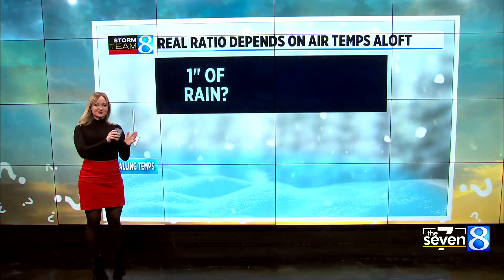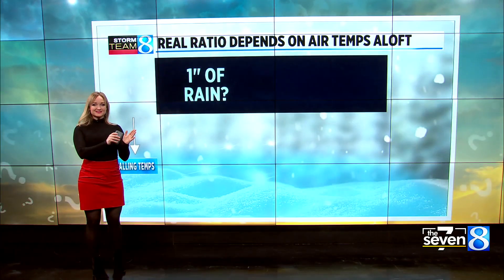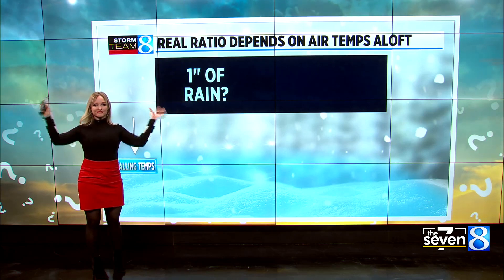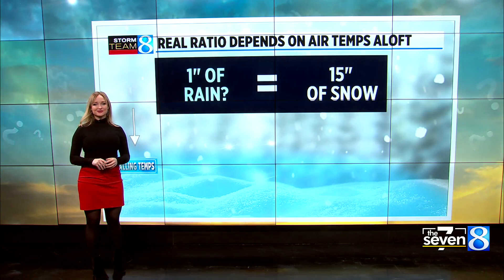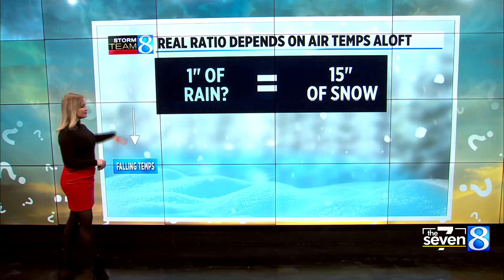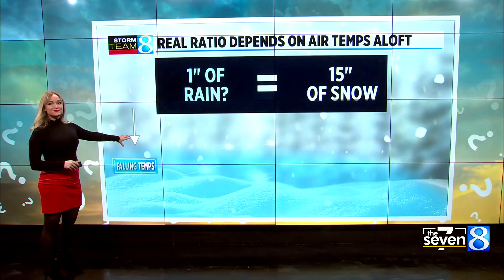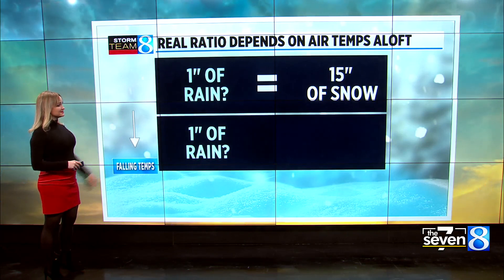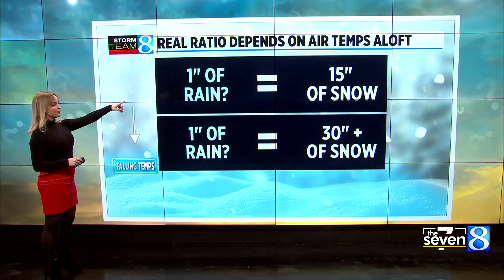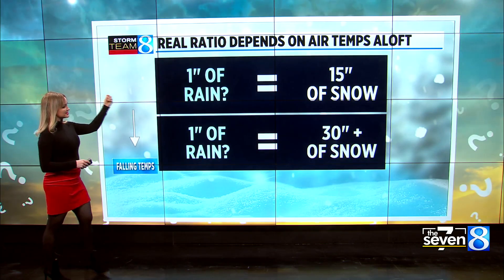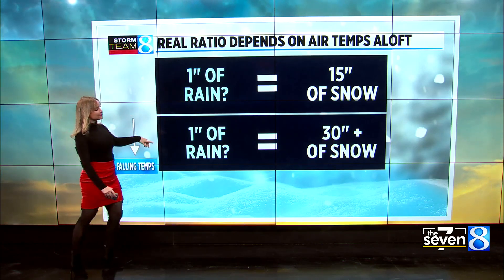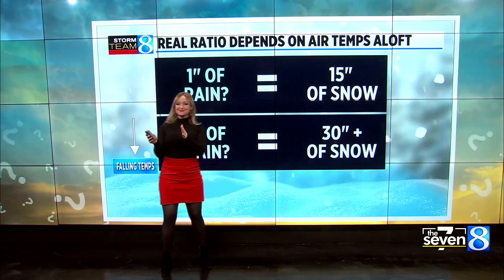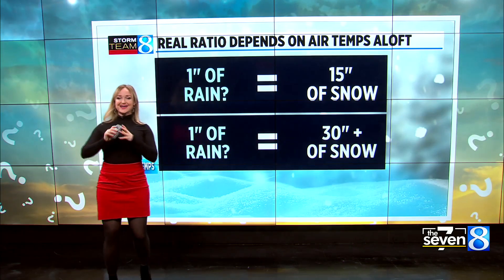So again, I started with the simplified answer — one to ten is the simplified overarching baseline, but it's not what actually always happens in the atmosphere. The colder the atmospheric temperature, the bigger the ratio. So oftentimes even here in West Michigan, one inch of water or liquid precipitation will equal 15 inches of snow, or sometimes one inch of rain will equal 30 inches of snow. So again, if it's off by a small amount, it can have big, big ramifications.